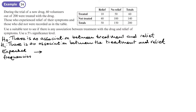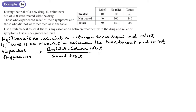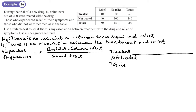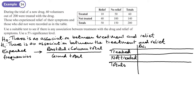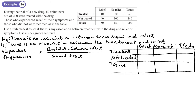Step one: we want a table showing the expected frequencies. The way we do that is row total times column total divided by grand total — we need to do that for each cell. The table headings are: relief, no relief, and totals. Here's the completed table with the expected values highlighted.